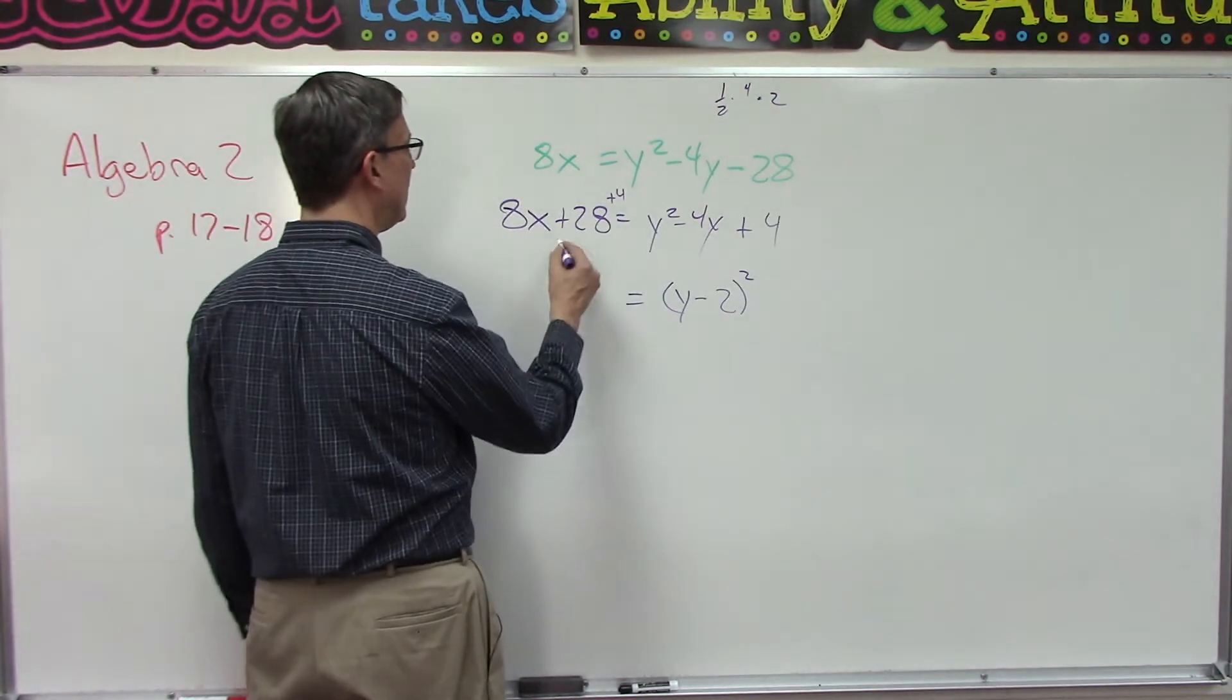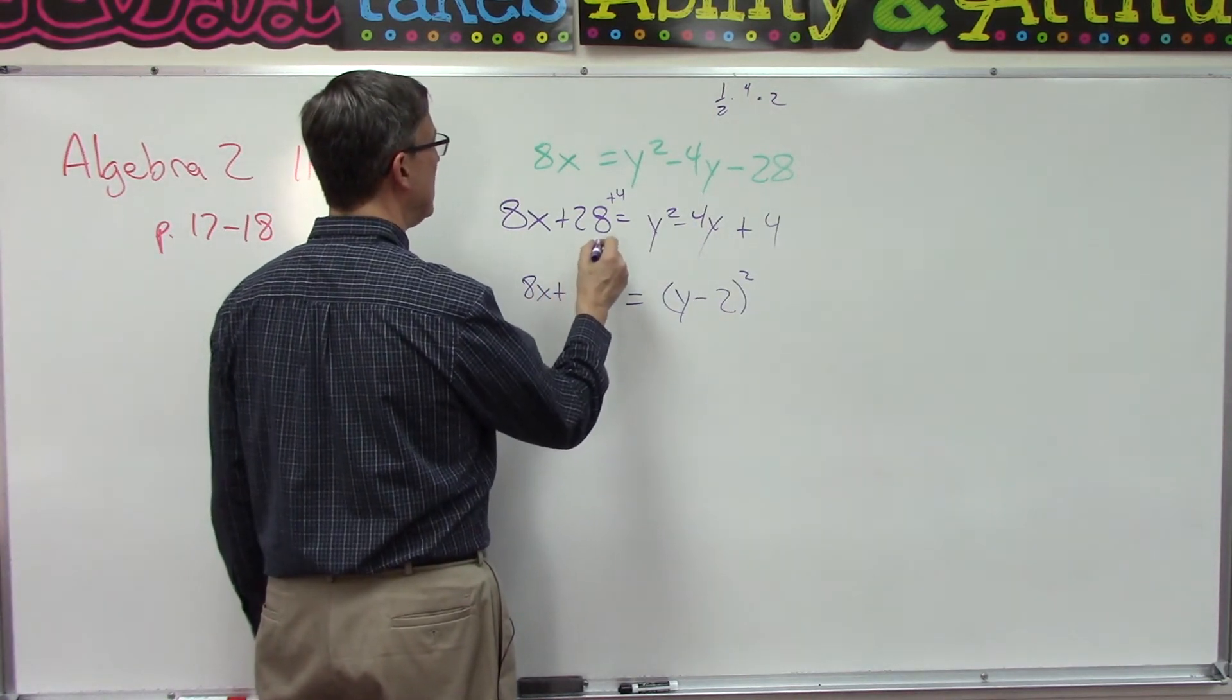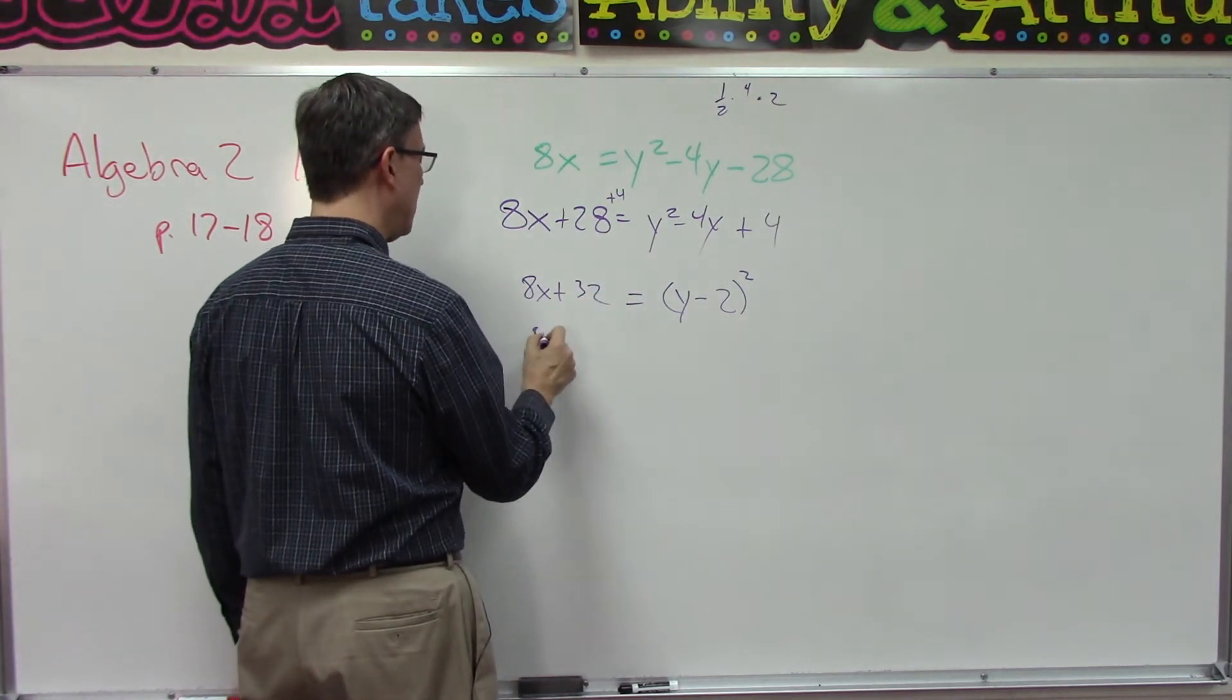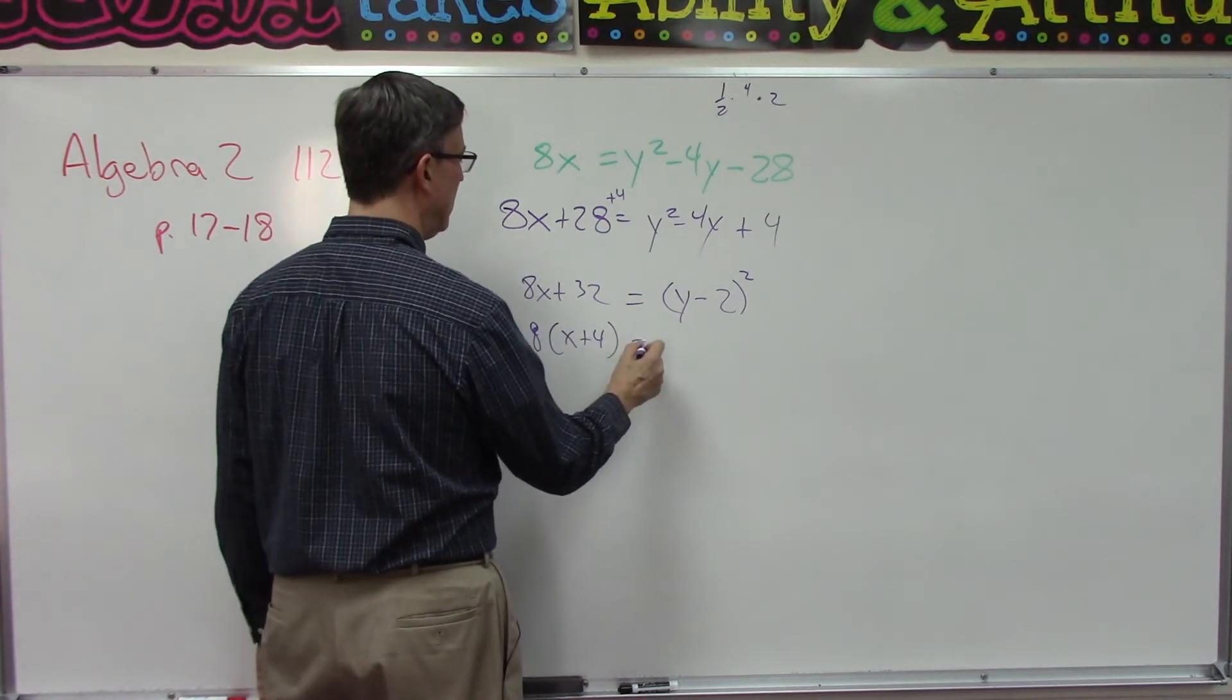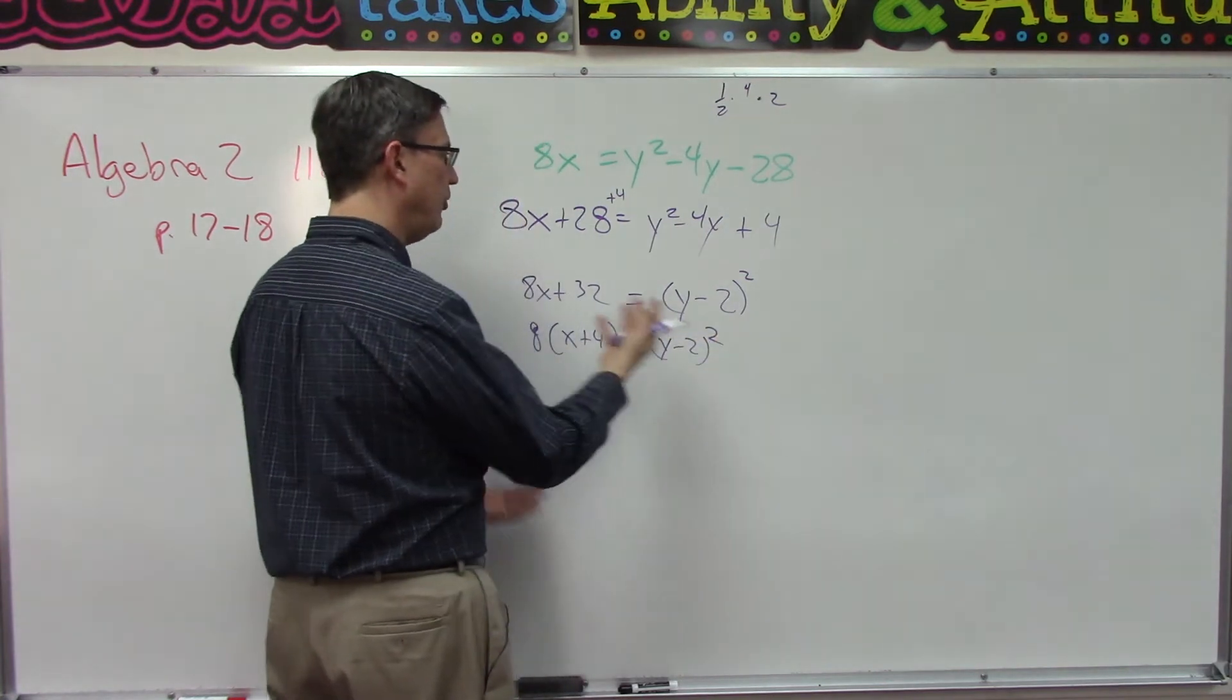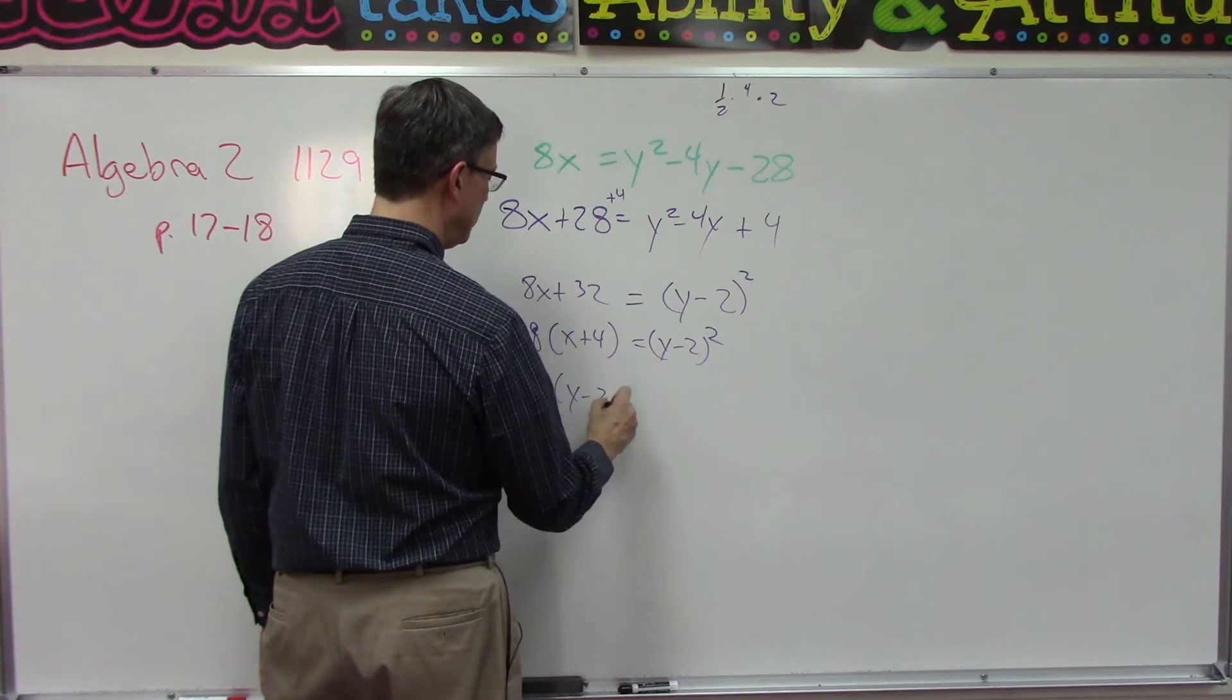So over here we have to simplify this and have 8x plus 28, 29, 30, 31, 32. And then we'll factor that 8 out of that, which gives us x plus 4. Okay, (y - 2) the quantity squared. Now we're going to flip the two sides, so we're just going to reverse it.